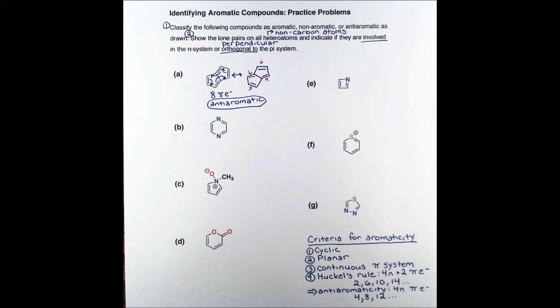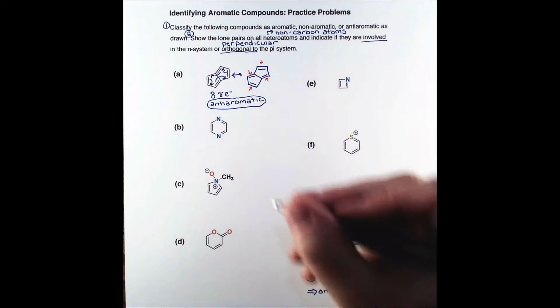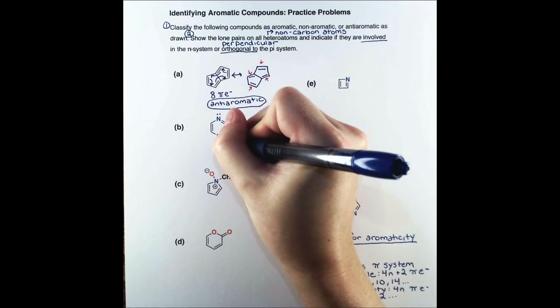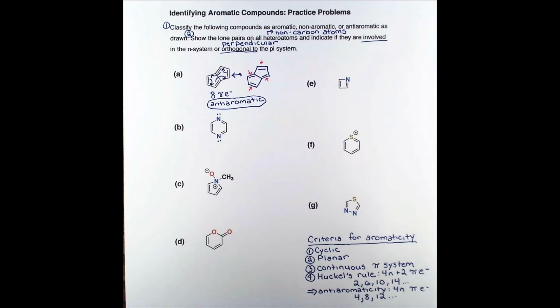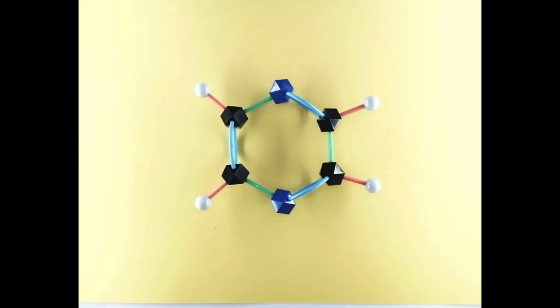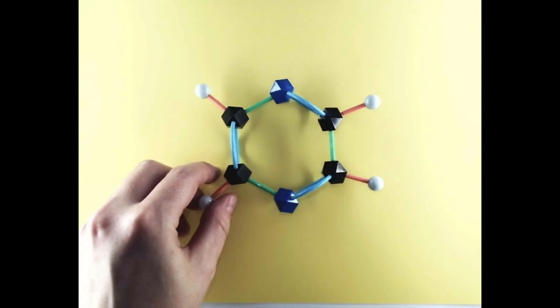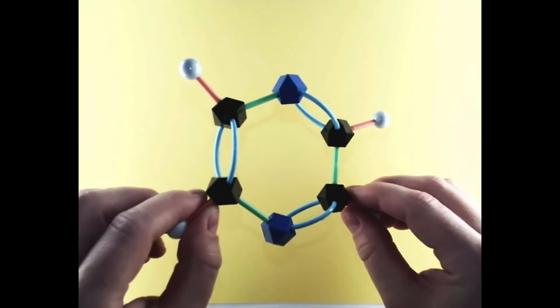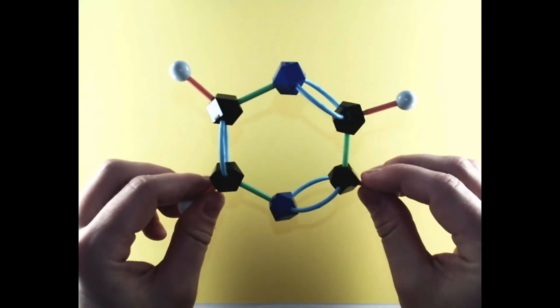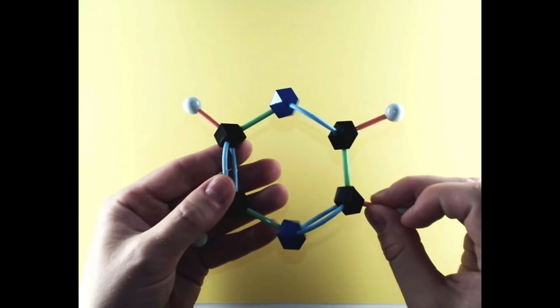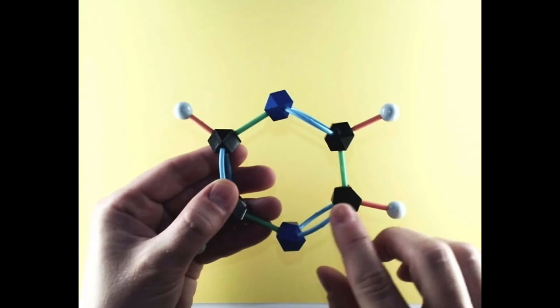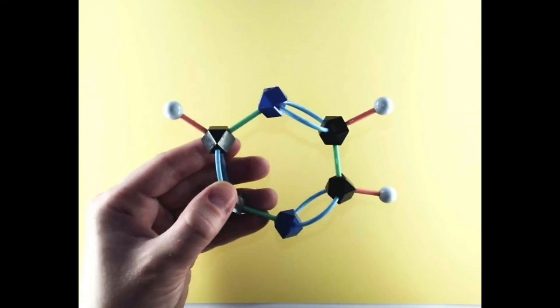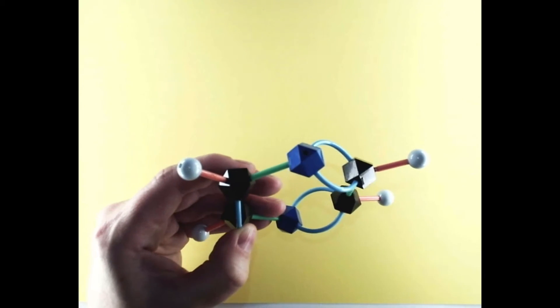Moving from a hydrocarbon example to a heterocycle with nitrogen atoms in the ring, we have a bit of a different situation. Each nitrogen has a lone pair, so we need to figure out whether or not they can participate in the pi system. It's helpful to look at a model for this one. We can see the blue double bonds and green single bonds, which is a reasonable representation for the pi system in this static model.